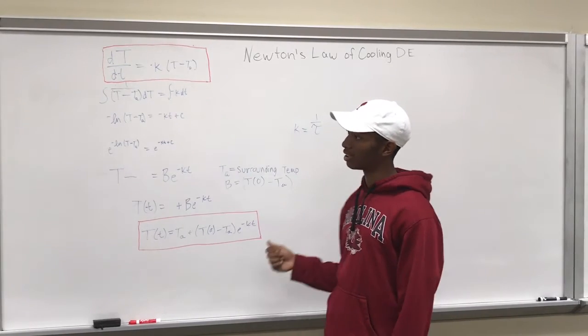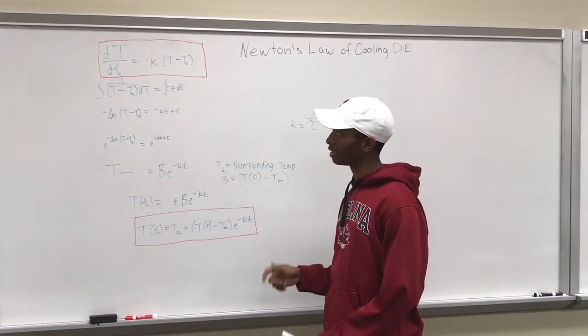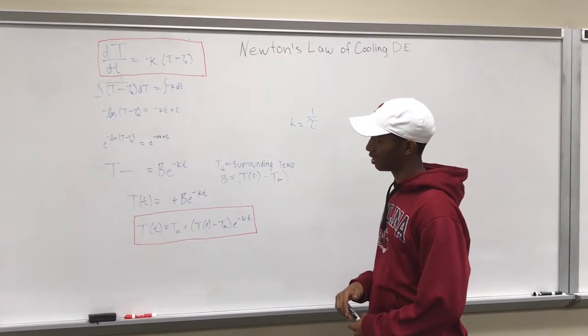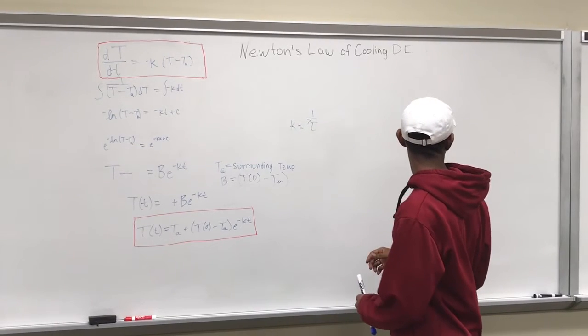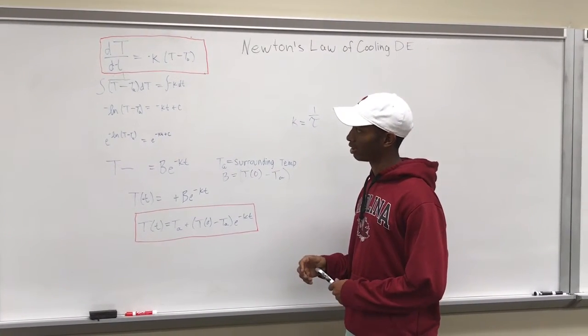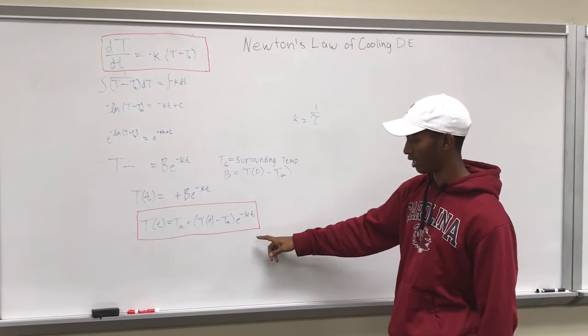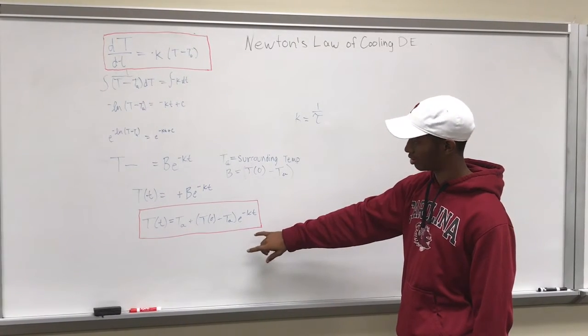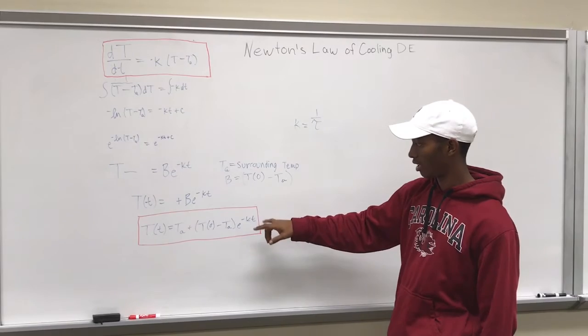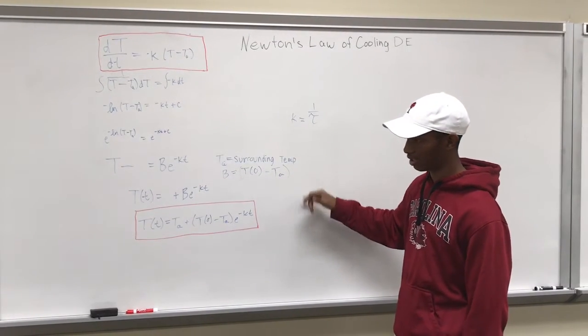As you can see, negative K is going to mirror 1 over RC in the RC circuit, and temperature of the medium minus temperature of the surrounding area will mirror that voltage minus IR. You solve that differential equation, and this is the formula that you get. It directly correlates with the voltage of the RC circuit, and here we substitute B equals T0 minus T of the surrounding area.